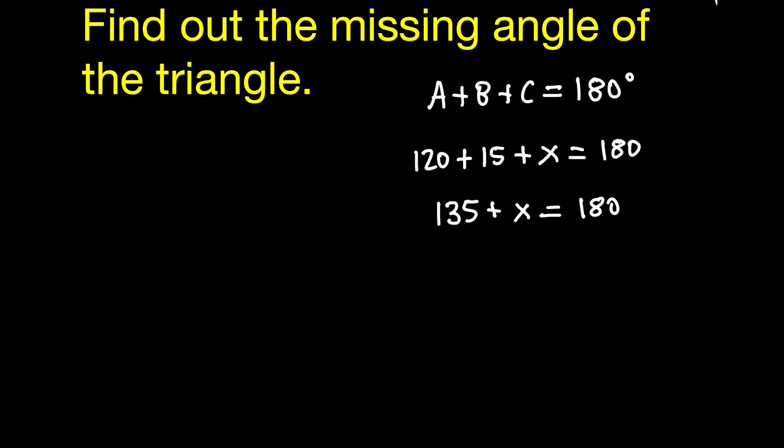And then just solve this like a regular algebra problem. So in order to get rid of that 135 on the left, you would add negative 135. So they cancel out. That makes zero. Remember that what you do on the left, you have to do on the right. So you would subtract 135 on the right.